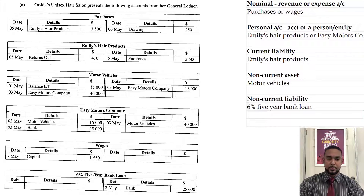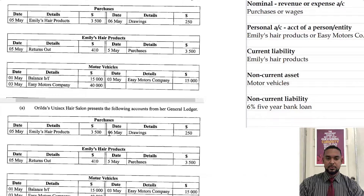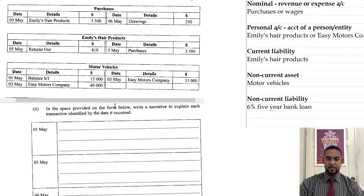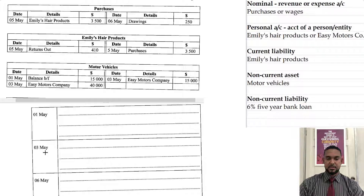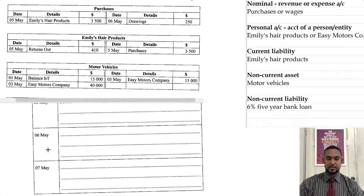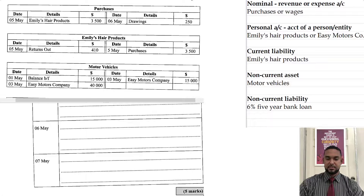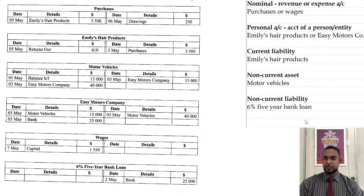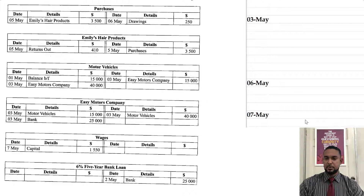So what I'm going to do is put back the split and scroll down so we can see what else they wanted us to do. It says, in the space provided on the form below, write a narrative to explain each transaction identified by the date it occurred. So I'm seeing the 1st of May, the 3rd of May, the 6th of May, and the 7th of May — and this is for five marks, so about seven and a half to eight minutes. I've put that information across in my Excel spreadsheet.